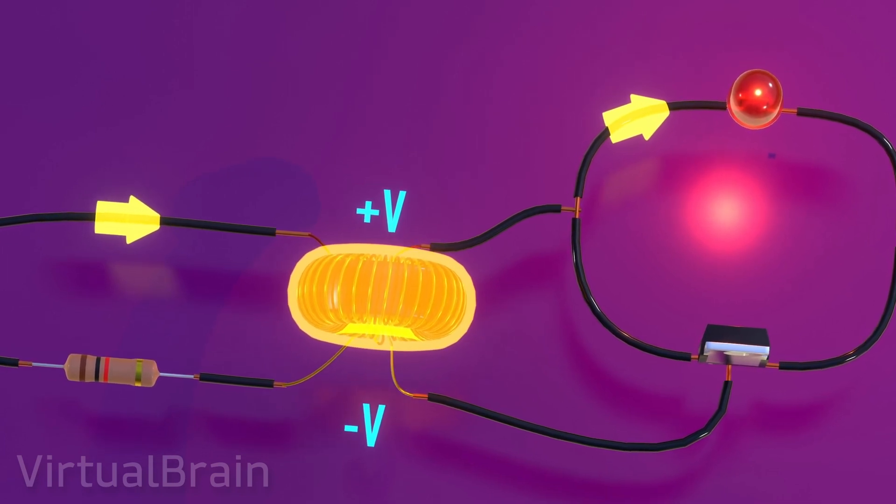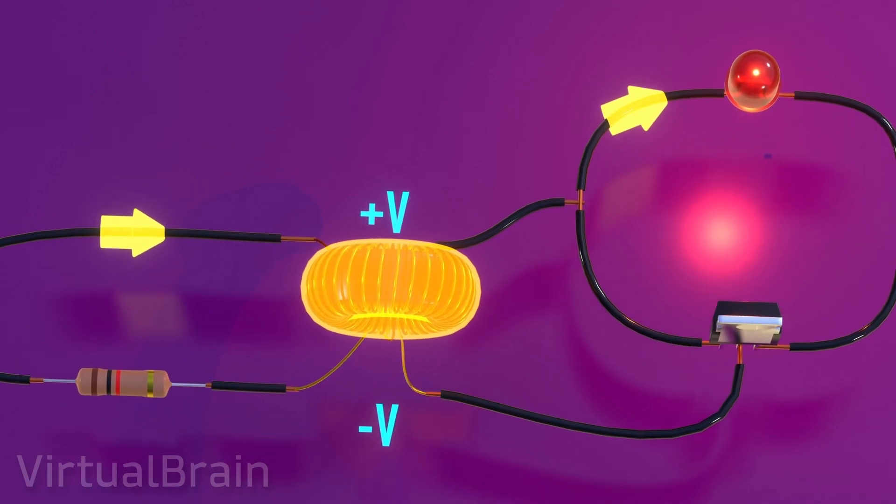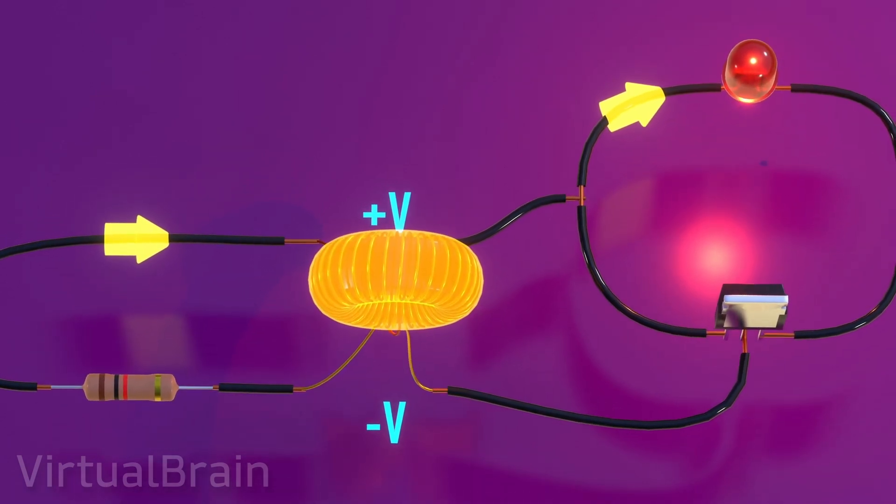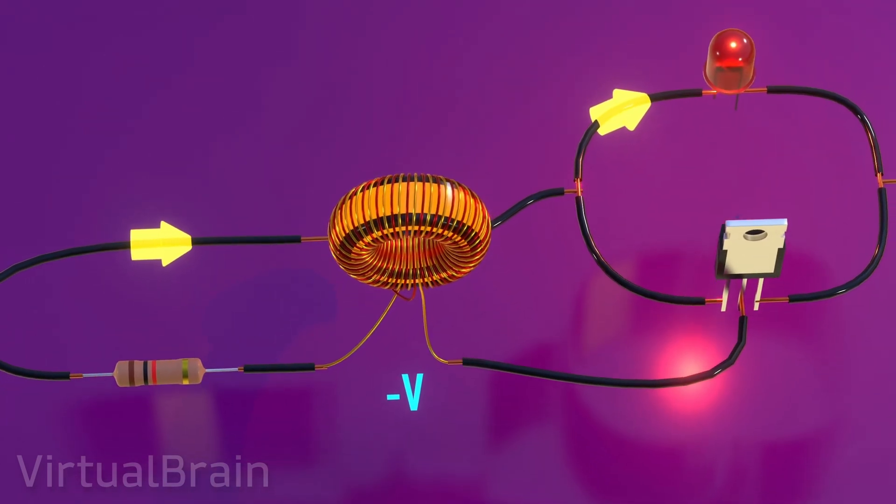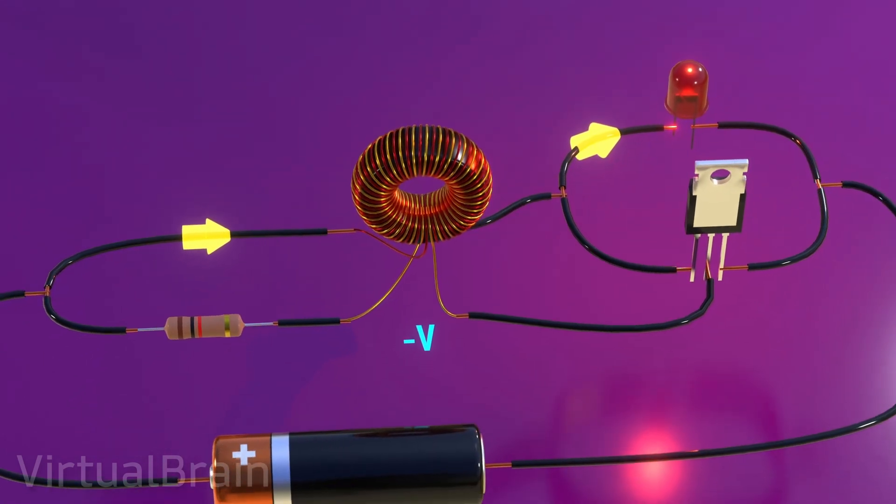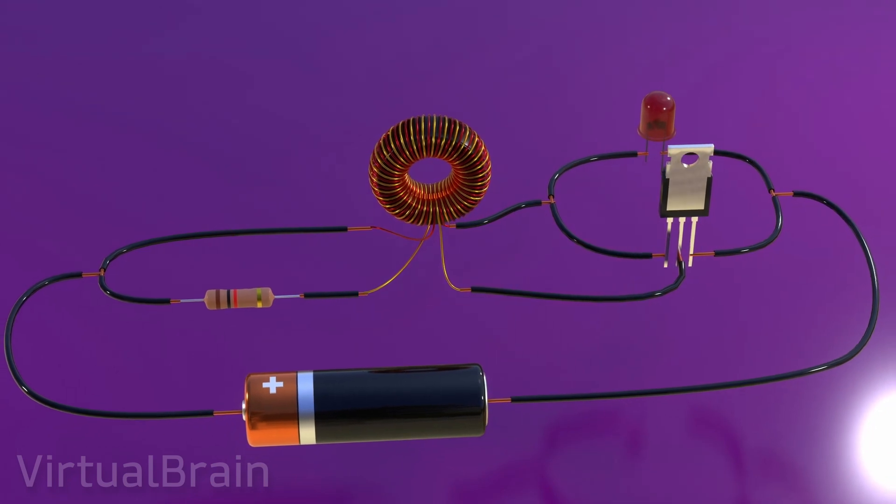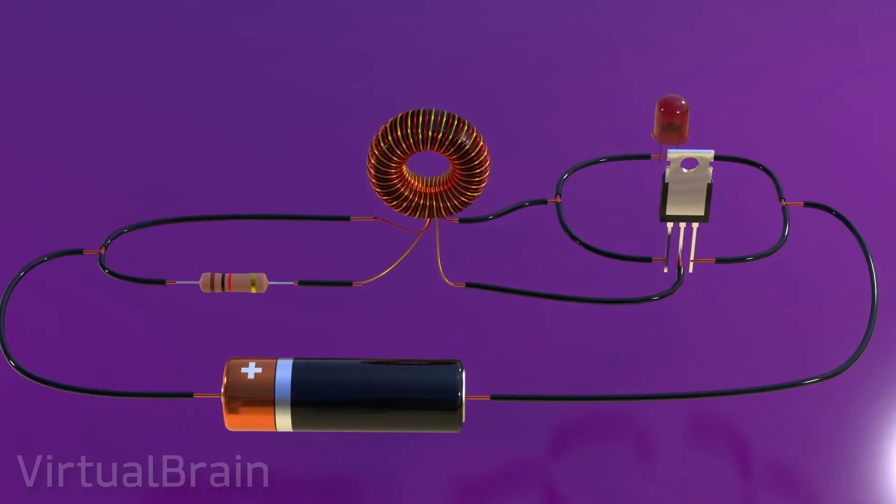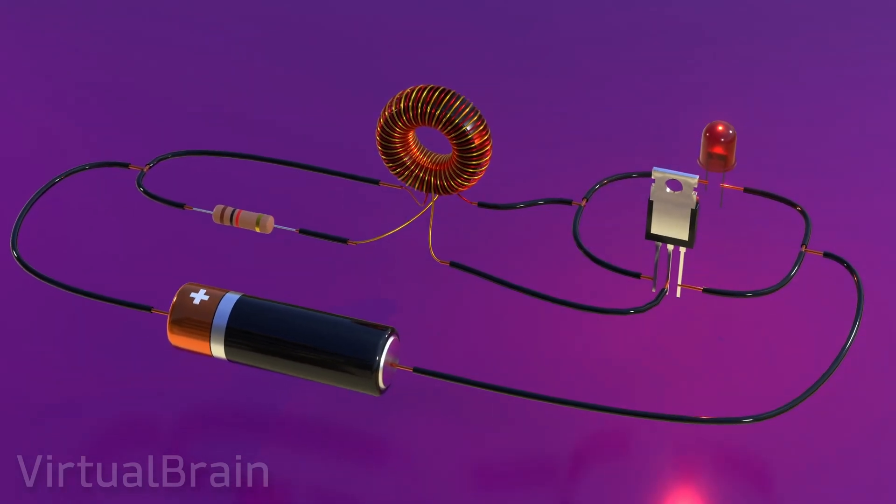At this point we will have achieved our main goal of turning on the LED, however, this will not last long, because the conditions to turn on this component will only be met while the magnetic field of the inductor is being reduced, and obviously this cannot be reduced indefinitely. Once the inductor loses its entire magnetic field, it will return to the initial state of the circuit, such that the LED will turn off and a small current will pass back through the base of the transistor, repeating the whole cycle again.